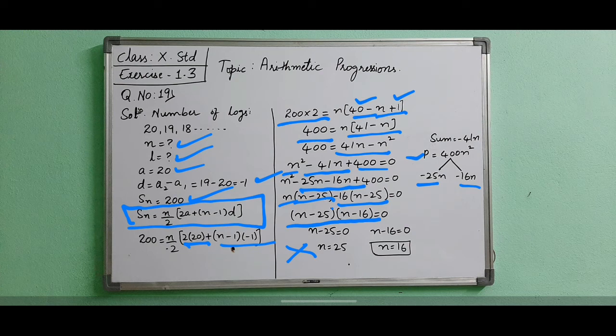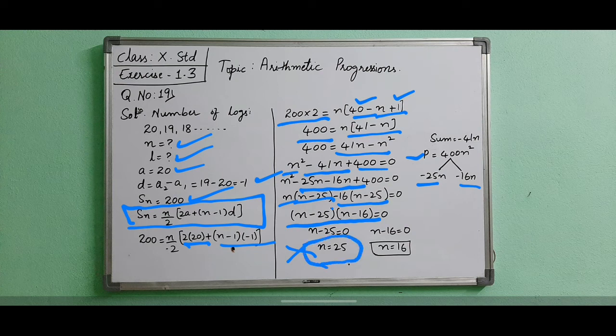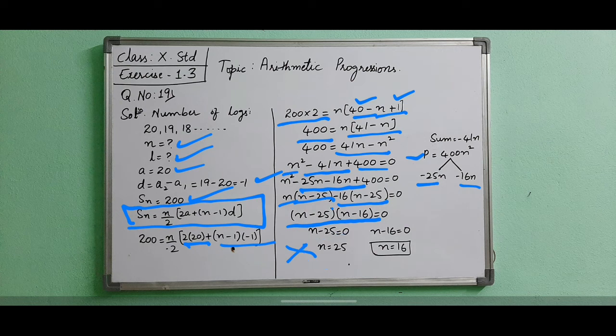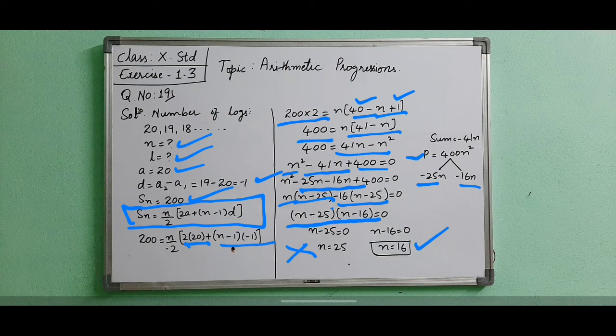It will be 20, 19, 18 up to 1, you can get that for 20 rows only. When you are taking n as 25 it is becoming more than 20. That is why it cannot be the answer. Our answer will be n equals 16.